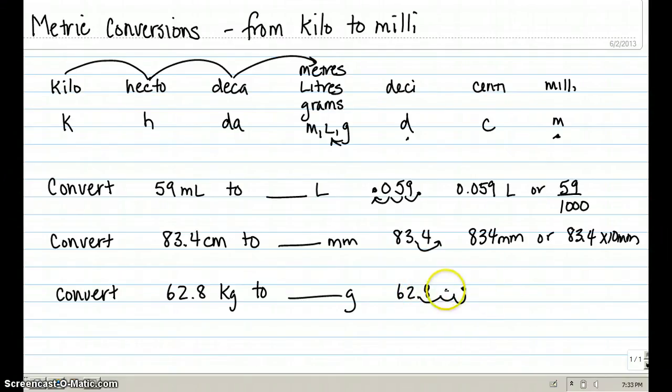My new decimal place with two zeros to hold place would be 62,800 grams, or I'm going to take 62.8 and multiply by 1,000. Okay? Same answer. Okay, I hope that helps to clear things up.